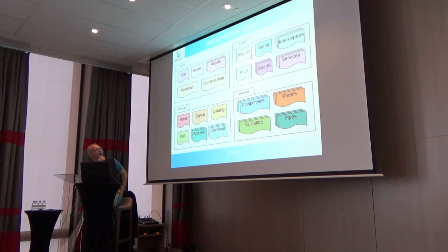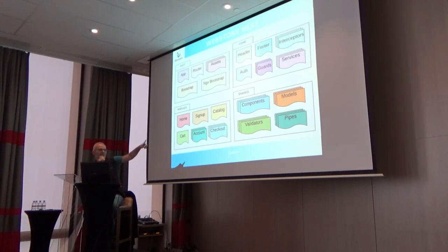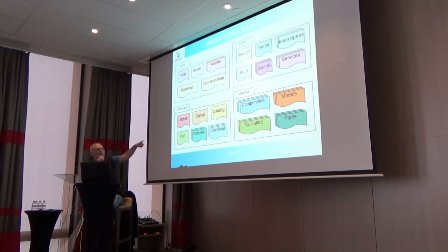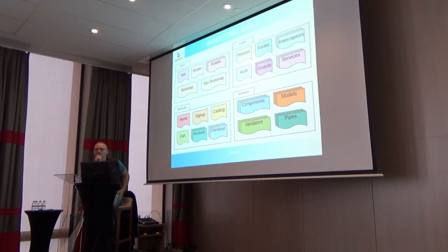Another directory is shared components and models — models that you have seen with Swagger. It's the same models. You can get them here. Validators to check all data you put to the application. And pipes — this is a term to say convert, for example currency and time format, and many things.